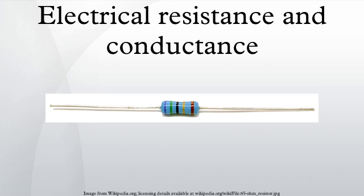The electrical resistance of an electrical conductor is the opposition to the passage of an electric current through that conductor. The inverse quantity is electrical conductance, the ease with which an electric current passes. Electrical resistance shares some conceptual parallels with the mechanical notion of friction. The SI unit of electrical resistance is the ohm, while electrical conductance is measured in Siemens.